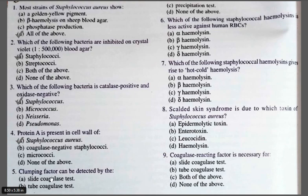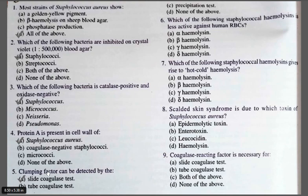Question number five: Clumping factor can be detected by — A. Slide coagulase test; B. Tube coagulase test; C. Precipitation test; D. None of the above. The correct answer is Option A, the slide coagulase test. Coagulase is of two types: the bound coagulase, called clumping factor, and free coagulase. The bound coagulase converts fibrinogen to fibrin, and for this the slide coagulase test is used.